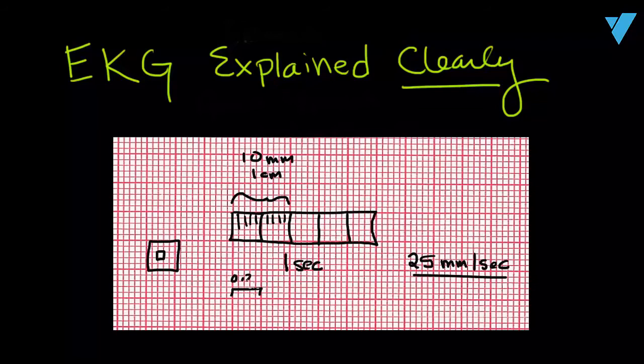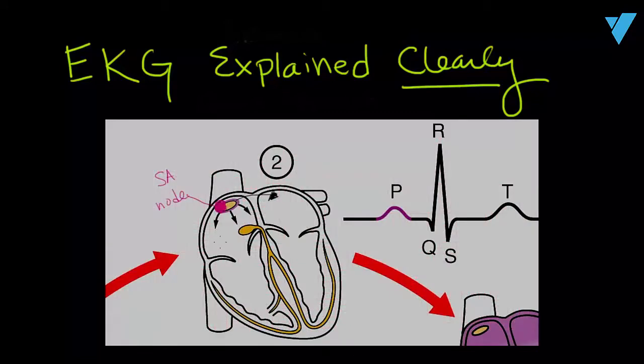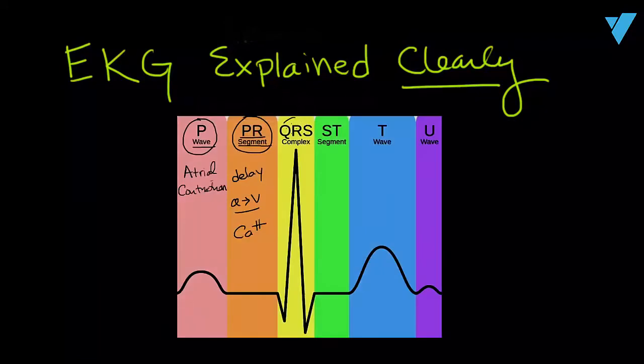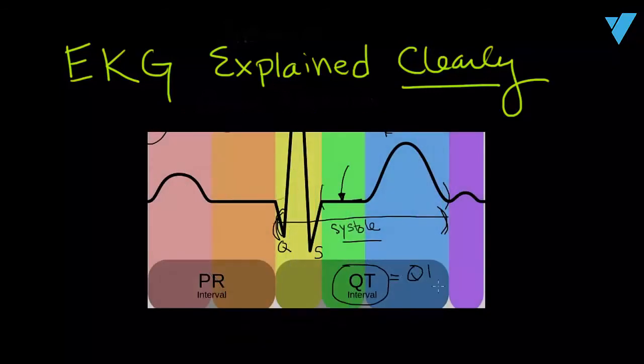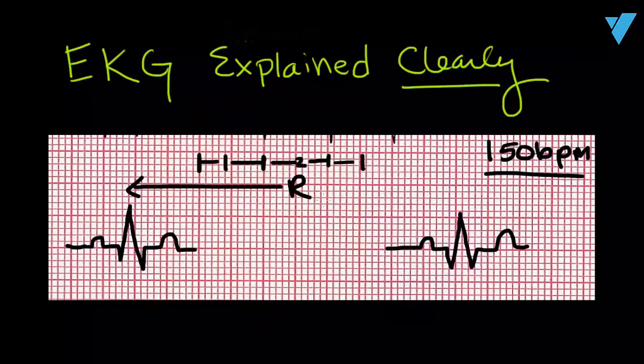Next, specifics on EKG tracing: the P-wave, the QRS complexes, the QT interval, the R-to-R interval, etc.